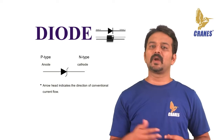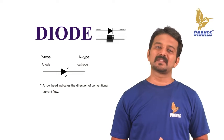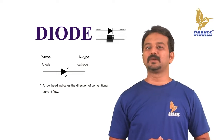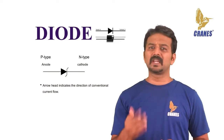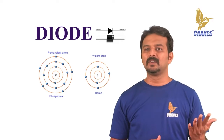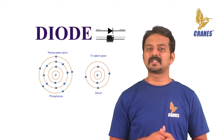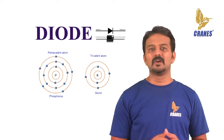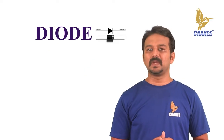Looking at the symbol of the diode, the arrowhead points in the direction of conventional current flow in the forward bias condition. The anode is connected to the p-side and the cathode is connected to the n-side. We can create a simple pn junction diode by doping the pentavalent or donor impurity in one portion and the trivalent or acceptor impurity in another portion of a silicon or germanium crystal block.